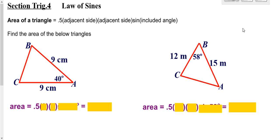The main part of this lesson is going to be focused on the Law of Sines, but we're going to start off with a special formula that allows you to find the area of a triangle if you know two sides and the angle in between. If you know two sides and the angle in between, all we have to do is go one half times one side times the other side times the sine of the angle in between.